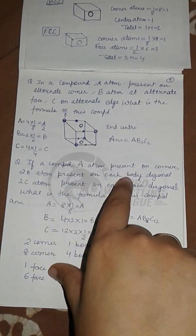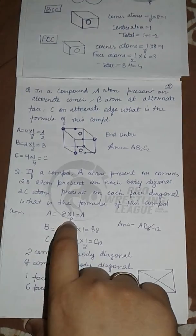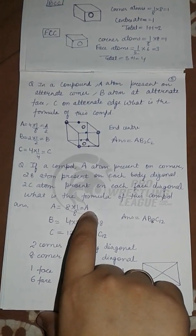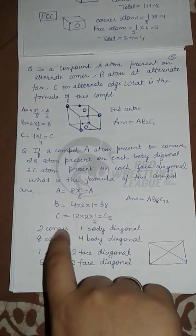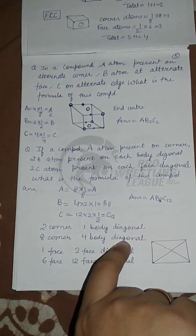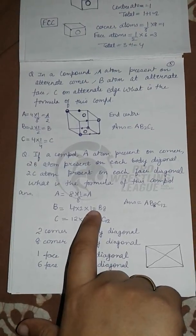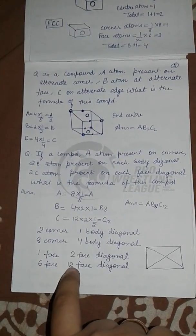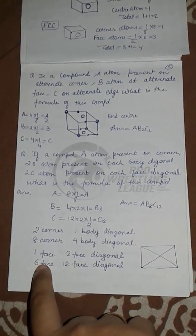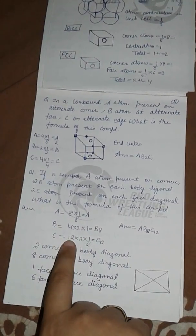If atom A is at corners, B atoms are on each body diagonal, and C atoms are on each face diagonal: A gives eight times one-eighth equals one. One body diagonal occupies two corners, so eight corners give four body diagonals; four times two atoms times one contribution gives B8. For face diagonals, six faces have two diagonals each giving twelve; two atoms times twelve times one-half contribution gives C12. So the formula is AB8C12.